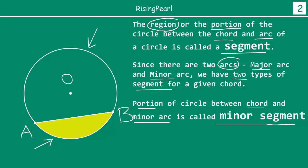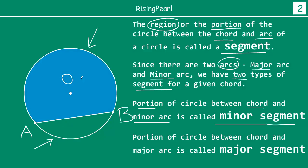The other segment, which is between the chord and the major arc — highlighted in blue — is called the major segment. Friends, it's important to understand that whenever we talk about a segment, we are not talking about something on the circle itself, but the part of the circle enclosed by the chord and the arc — that means the inside of the circle.